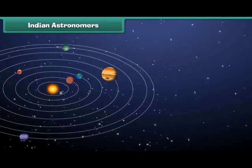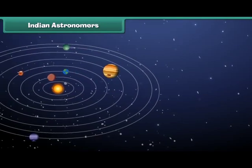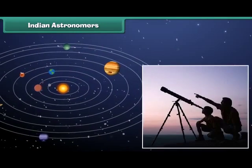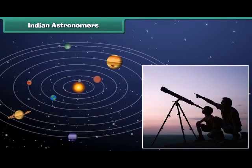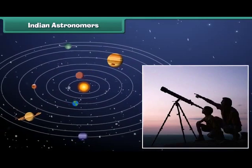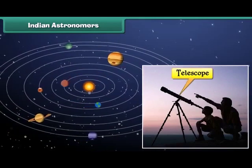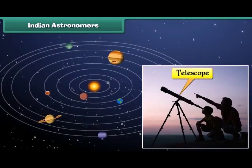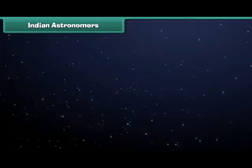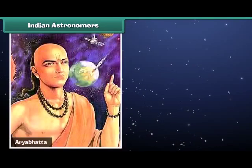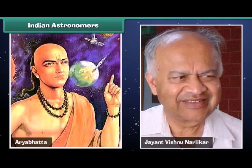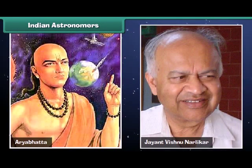An astronomer is a person who studies stars and planets. He uses a telescope for his study. Bhaskaracharya, Aryabhatta and Jayant Vishnu Narlikar are some well-known Indian astronomers.